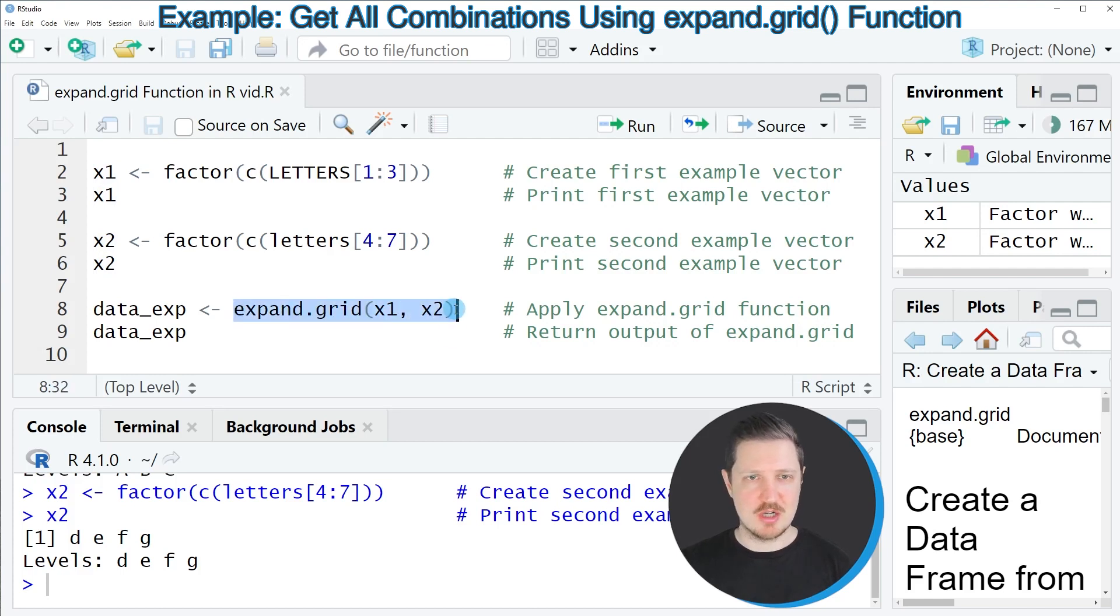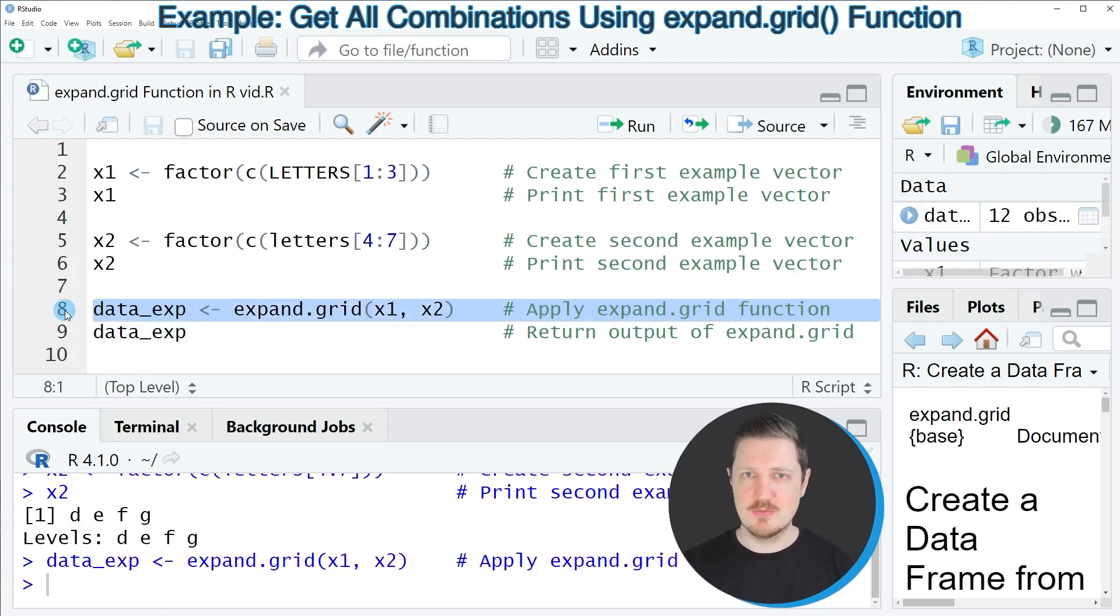And then I'm storing the output of the expand.grid function in a new data object that I'm calling data.exp. So after running line 8 of the code, this new data object data.exp is appearing at the top right.